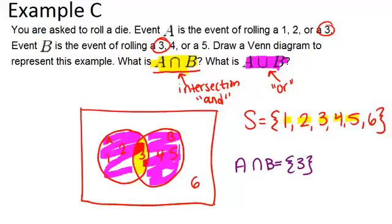1, 2, 3, 4, and 5. Because all of those numbers are either in A or they're in B, or both. So to write that, we would just say A or B equals, and then we list out all the numbers that are in either of the circles. And that's it.